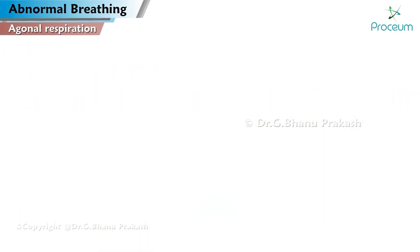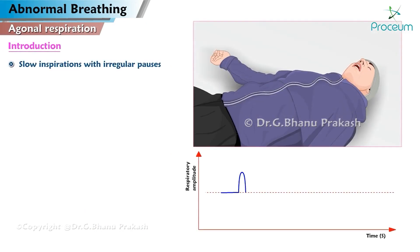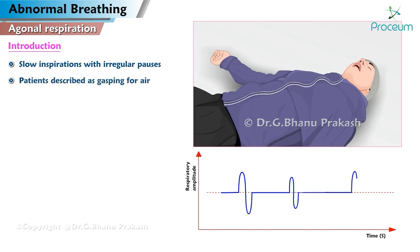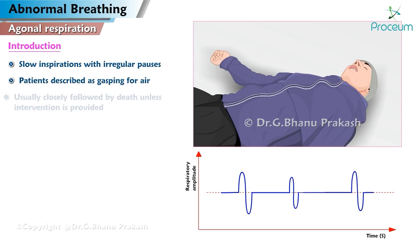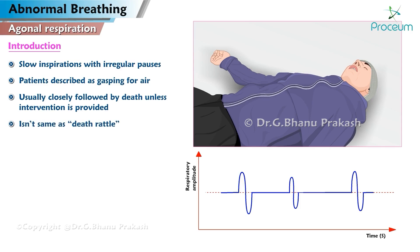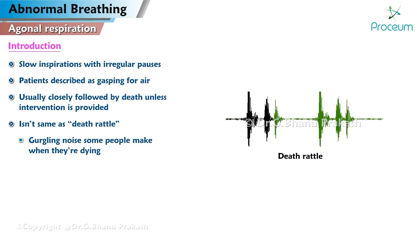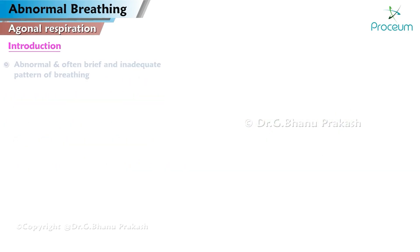Agonal respiration. Introduction. Slow inspirations with irregular pauses is called agonal breathing. Patients are often described as gasping for air. Agonal breathing is usually closely followed by death unless intervention is provided. It is not the same as a death rattle, which is a gurgling noise caused by saliva or mucus collecting in the throat or chest. Agonal breathing is instead an abnormal and often brief and inadequate pattern of breathing.